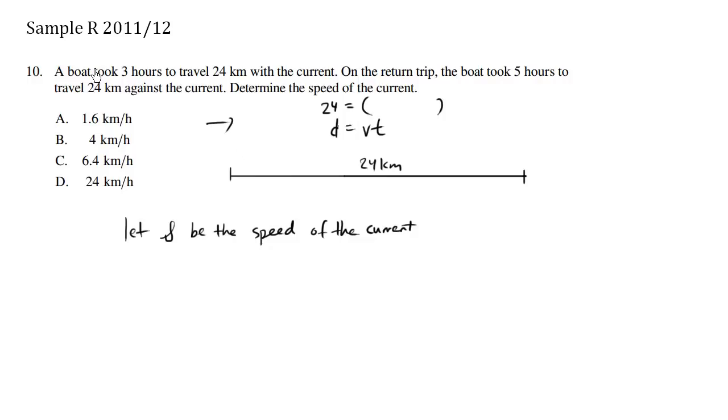On the way going this way where it took us three hours, so the time here is three. What's the velocity? The velocity is going to be a little bit faster because we're with the current, so it's going to be whatever the velocity of the boat is plus s, since we have the speed of the current. Probably should have called this variable c, but it doesn't matter what variables we use.